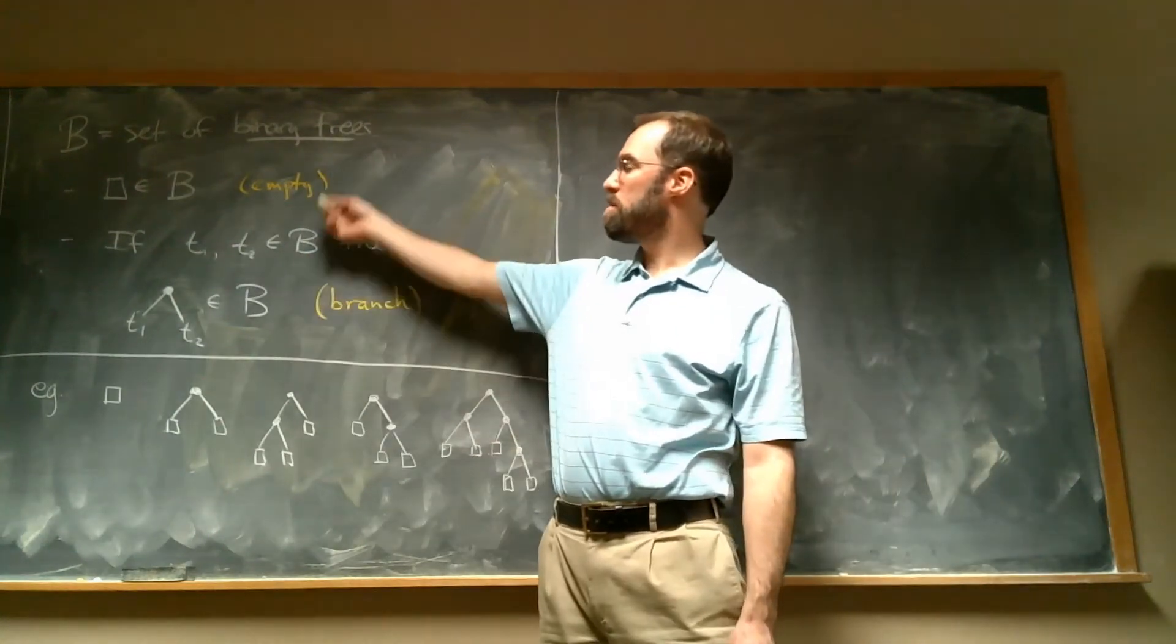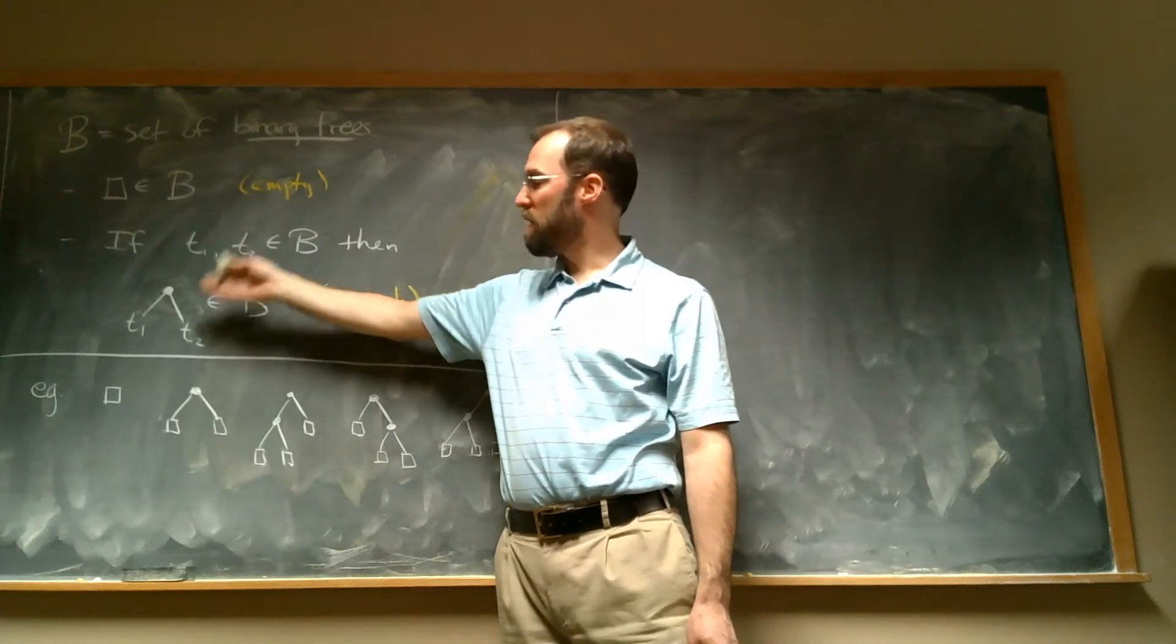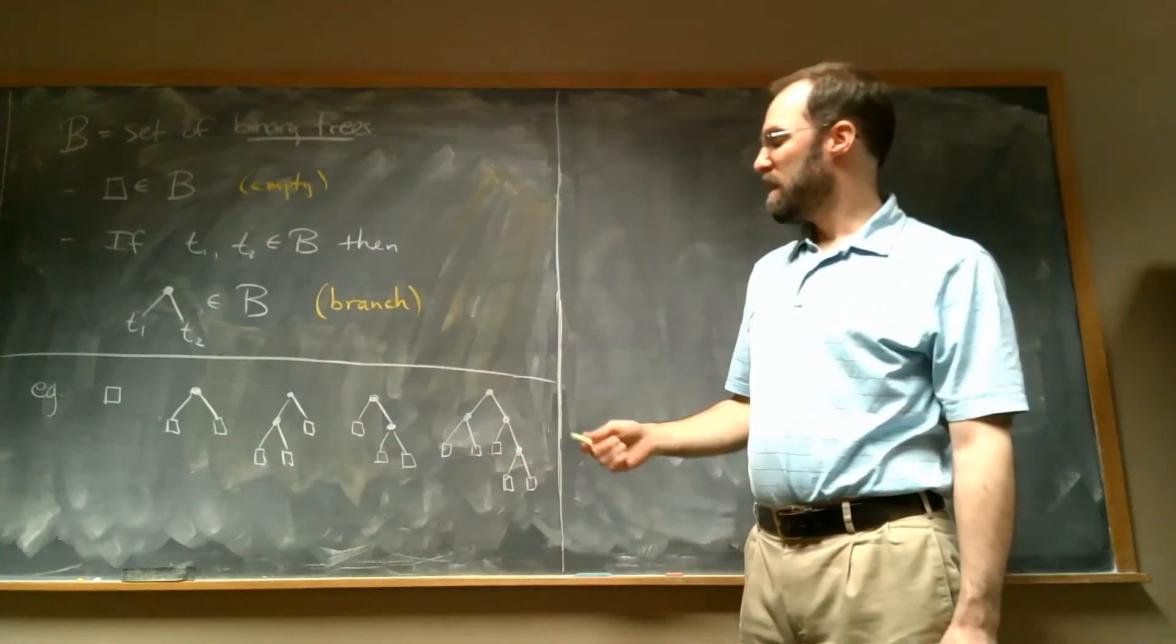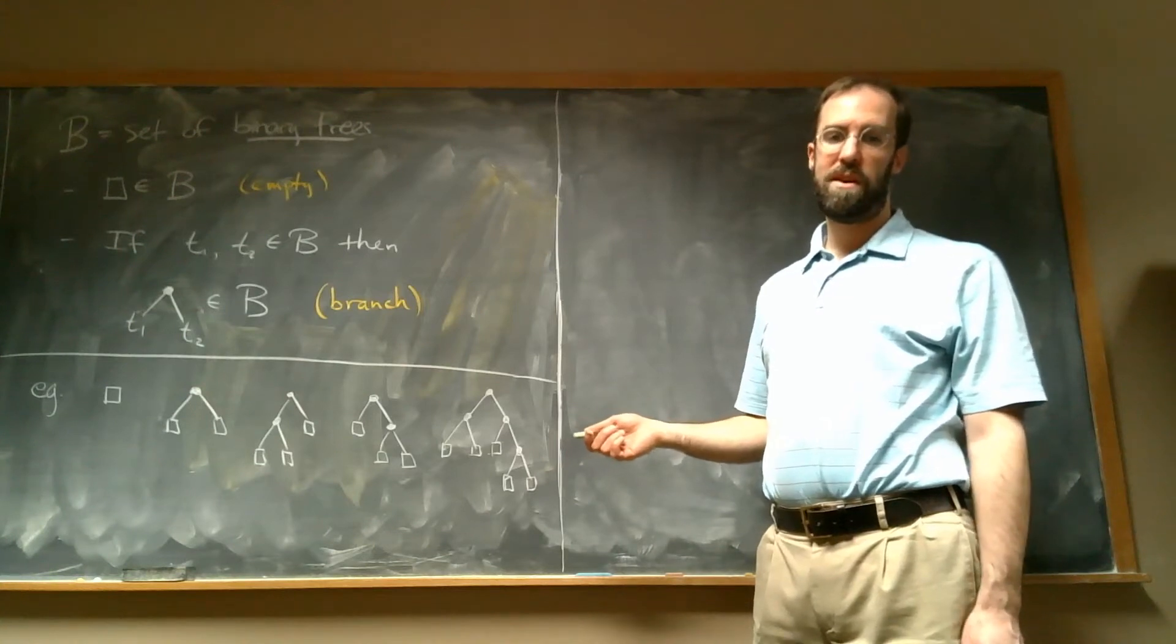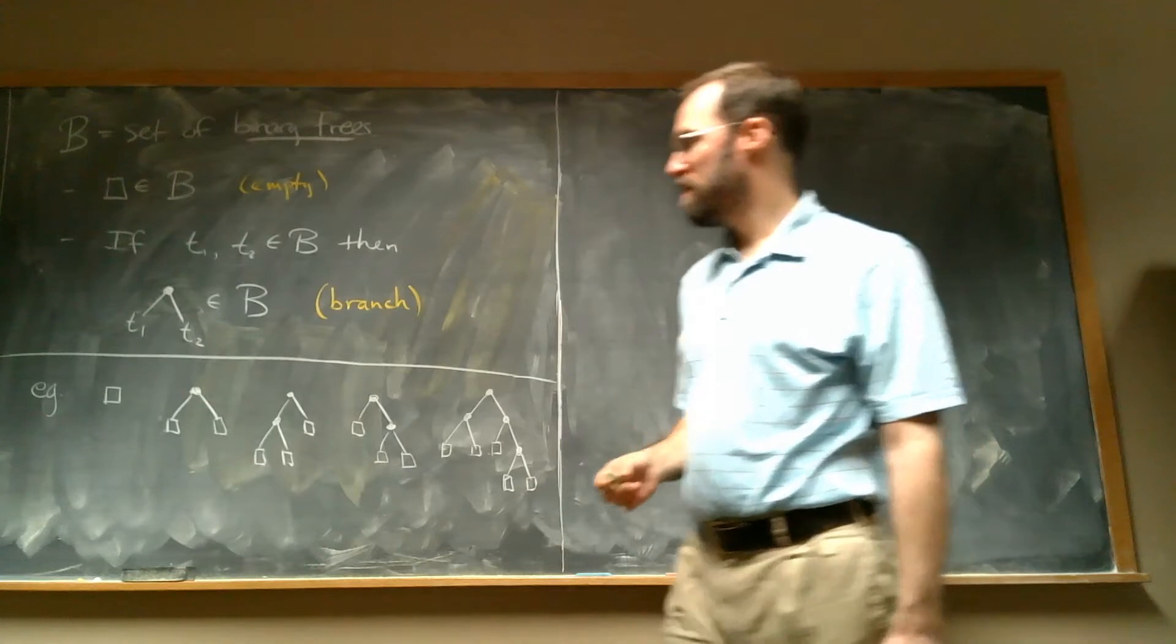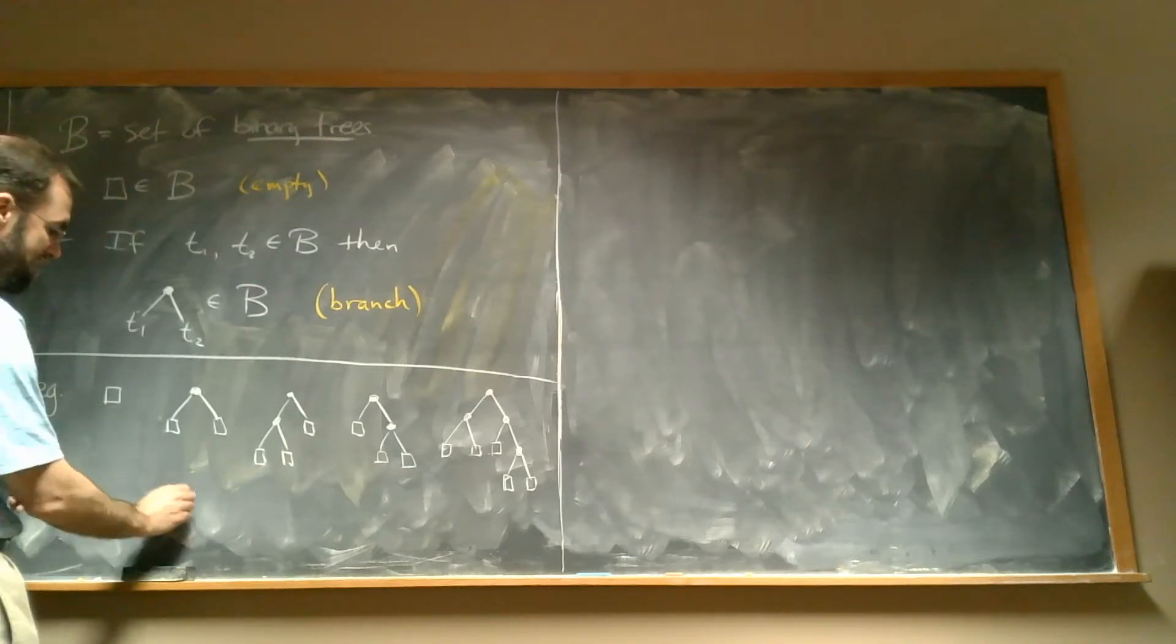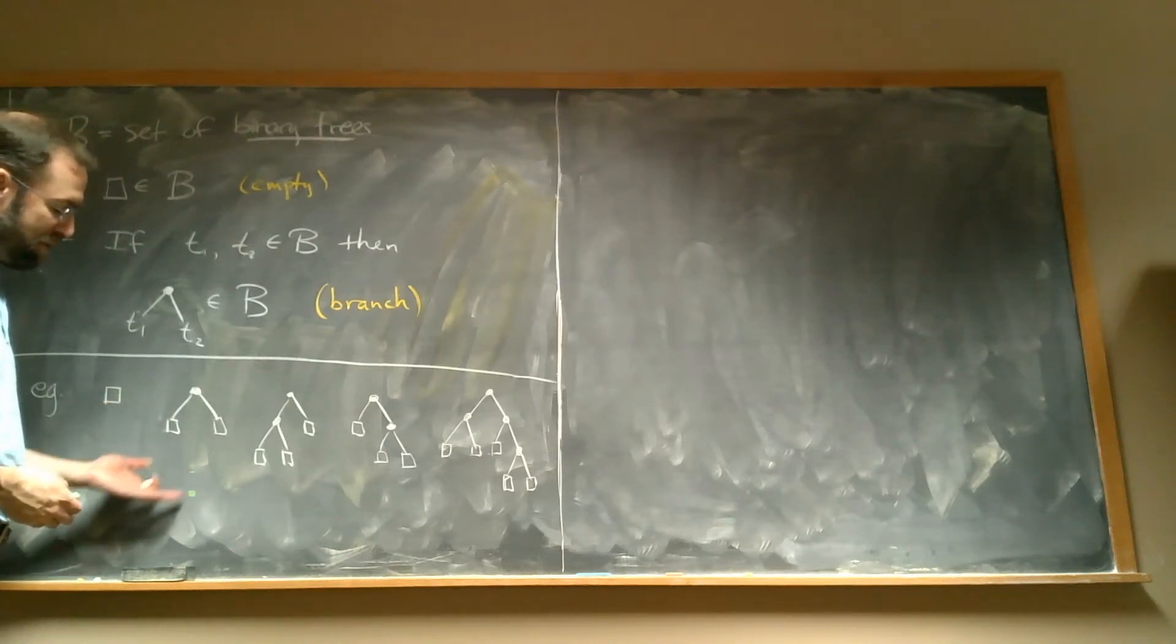Because this rule, the only two, these are the only two ways to make a tree. And this rule doesn't let me stop, I have to keep going and have two more trees under there. The only way I can stop is by having an empty. So I'm always going to have empties everywhere on the bottom, so it's kind of actually silly to draw them. It's just a waste of chalk and time in some sense.